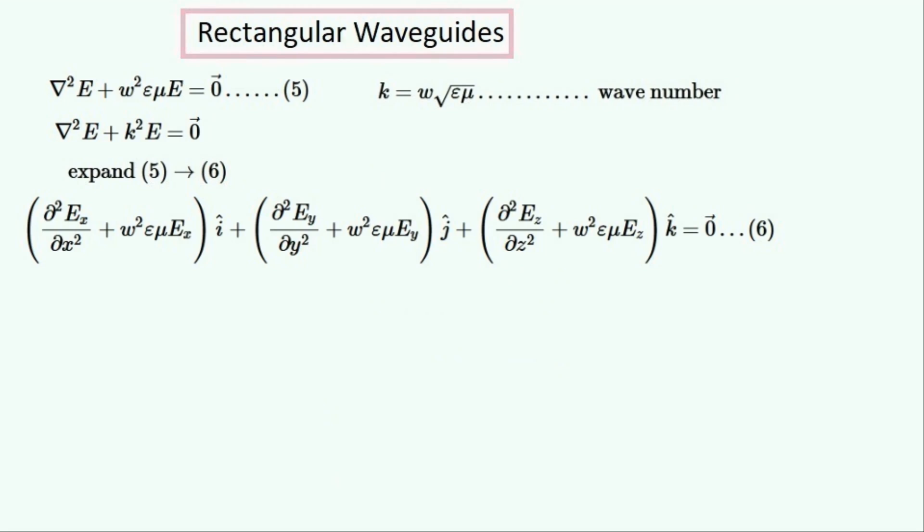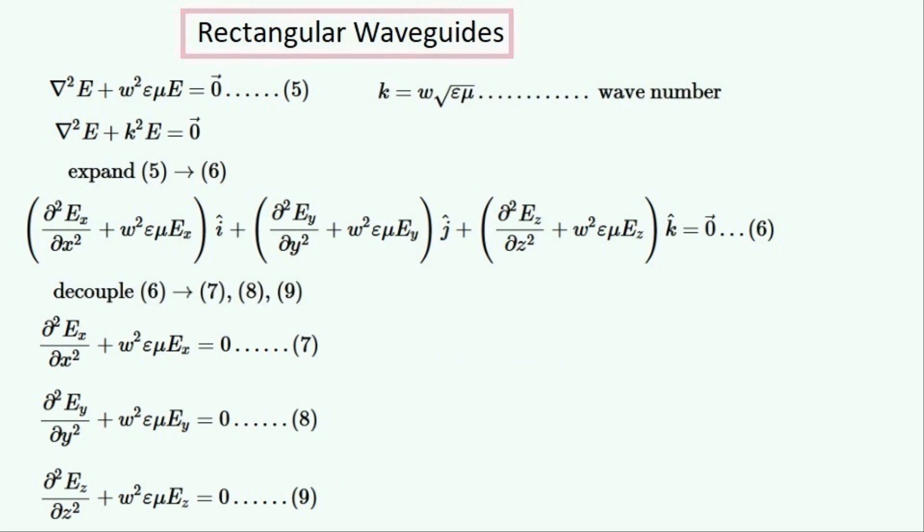We can decouple this equation, seeing that each expression that is multiplied by a different unit vector, like î and ĵ, can be separated. So this is what the decoupled equations look like, one for each direction: x, y, and z.